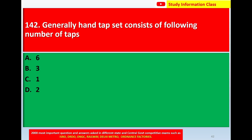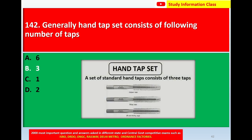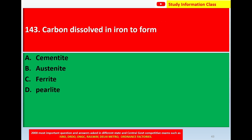Question number 142: A tap set generally consists of how many taps? Option A: 6, Option B: 3, Option C: 1, Option D: 2. The correct answer is Option B, 3. Here is the diagram of a tap set — the set of standard taps consists of three taps: taper tap, plug tap, and bottoming tap.